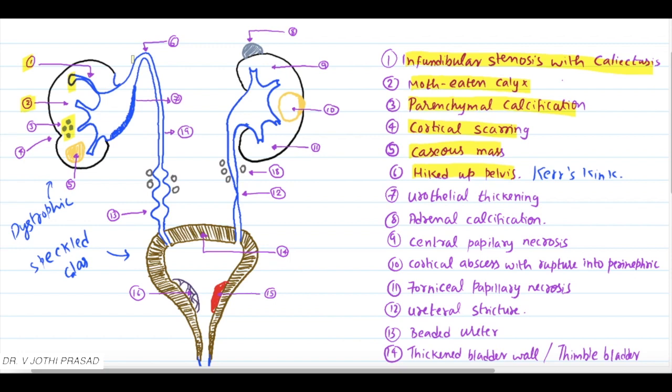Which is nothing but narrowing and contraction of the upper calyceal infundibulum and pelvis causing this hiked up appearance.